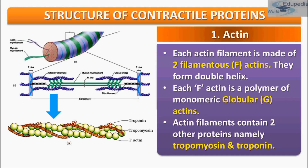Two filaments of another protein, tropomyosin, run close to F-actin throughout its length. As you can see, the F-actin and tropomyosin are helically wound together, and tropomyosin runs throughout the length of F-actin.